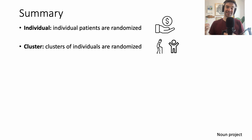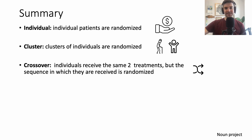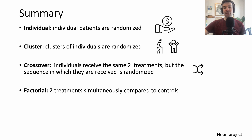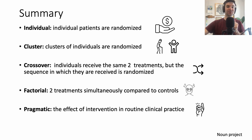To reduce bias in cluster trials, you want lots of clusters. In crossover trials, individuals receive the same two treatments but the sequence is randomized — these are uncommon in medicine. For factorial designs, each person could get up to two drugs compared to control, though these can be confusing to understand. Pragmatic trials look at the effectiveness of an intervention in routine clinical practice — most randomize individuals or clusters and are simpler to execute, though still challenging.